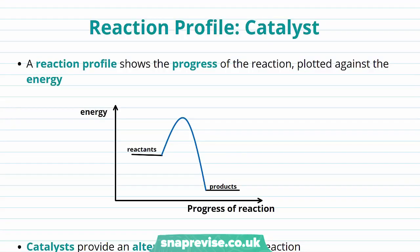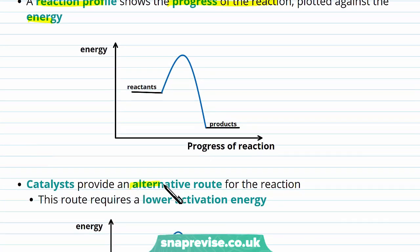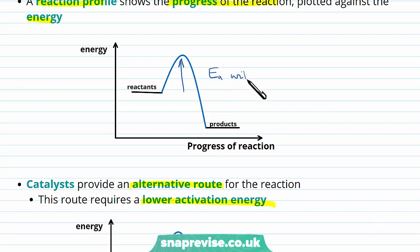A reaction profile shows the progress of the reaction plotted against energy. On the x-axis we have the progress of the reaction, and on the y-axis we have energy. We have our reactants and products. Catalysts provide an alternative route for the reaction requiring a lower activation energy. This first reaction profile represents our reaction without a catalyst — the blue arrow here represents the activation energy with no catalyst.